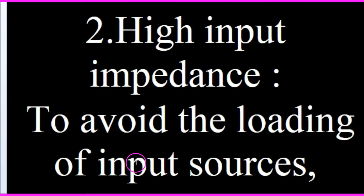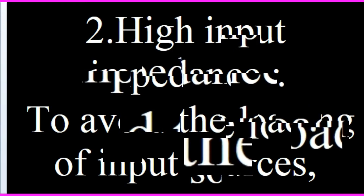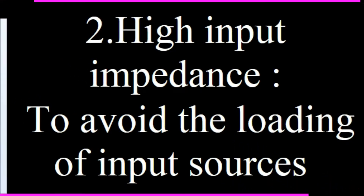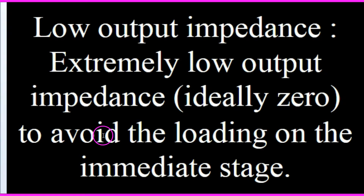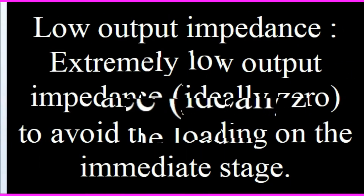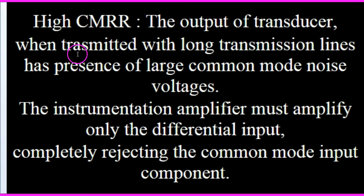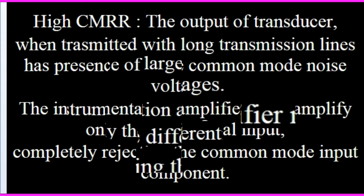The instrumentation amplifier should have high input impedance to avoid loading of the input sources, and the instrumentation amplifier should not draw any current from the input sources. Input impedance should be high but output impedance should be very low. It should also have very high CMRR, which is required to amplify the differential input while rejecting common-mode signals and noise.